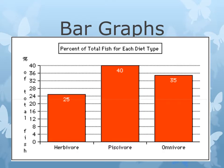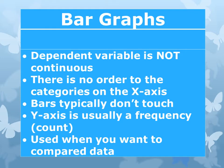Bar graphs look something like this. With a bar graph, your dependent variable is not continuous — it could be, but it doesn't have to be. There's no order to the categories on the x-axis. The bars typically don't touch, and the y-axis usually shows a frequency — a count of how many times something happens or how many people were polled. The important thing is that a bar graph is used when you want to compare data.